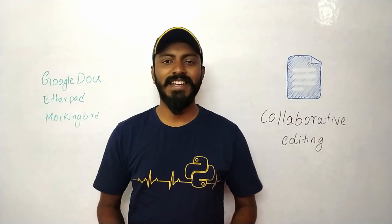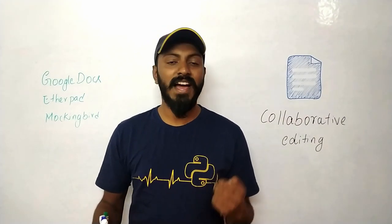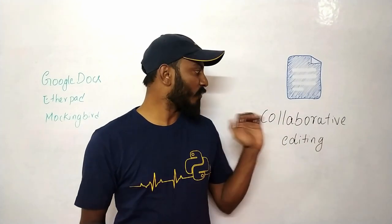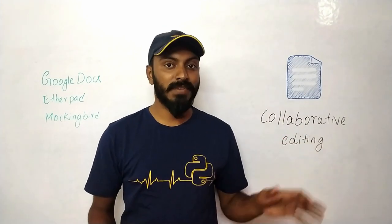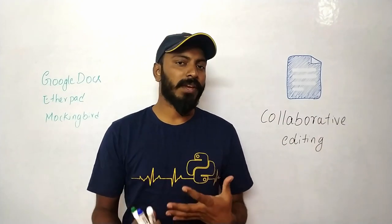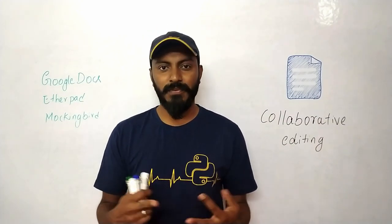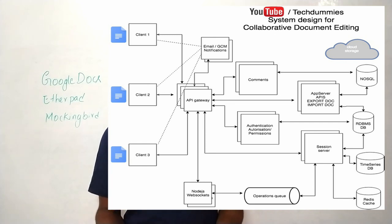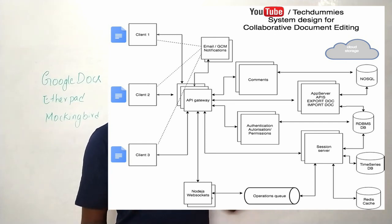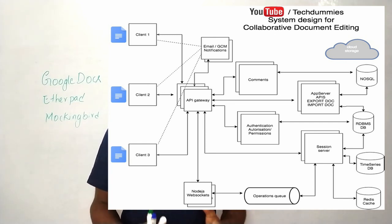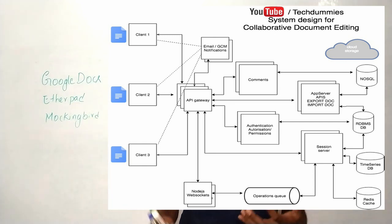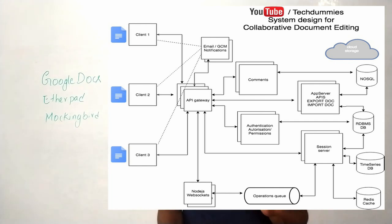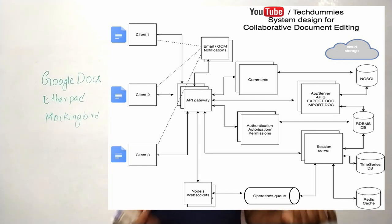Hello everyone, my name is Naren and in this session let's learn about collaborative editing. We're going to talk about the different strategies, different algorithms, and different components we need to design collaborative editing applications like Google Docs, Etherpad, and Mockingbird, which is actually a wireframe collaborative editing application.